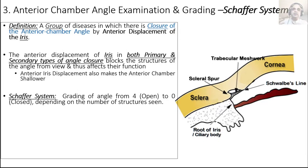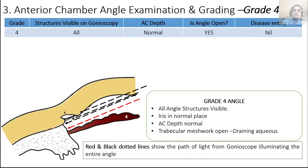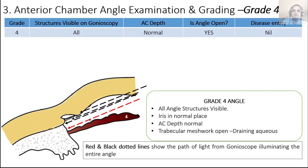There are four structures counted: structure 1 is the ciliary body band, structure 2 is the scleral spur, structure 3 is the trabecular meshwork, and structure 4 is Schwalbe's line. Starting from grade 4: when the iris is in its normal position, you can see all four structures — this is a grade 4 open angle. An angle is always considered open as long as the trabecular meshwork is viewable, implying it's functioning and aqueous is flowing out.